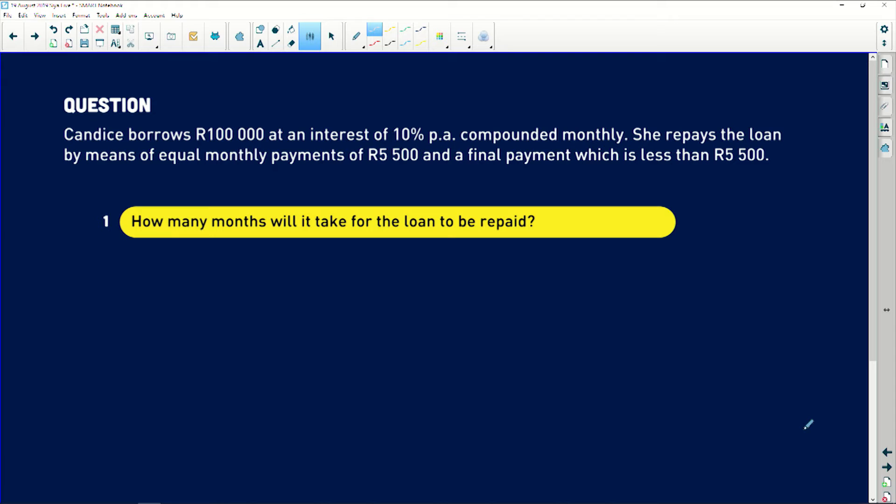So let's have a look at the question, but just remember that we're talking present value, especially when I see the word loan. I have Candice borrows R100,000 at an interest rate of 10% per annum compounded monthly. She repays the loan by means of equal monthly payments of R5,500 and a final payment which is less than the monthly payments that she's making.